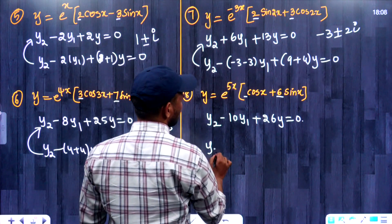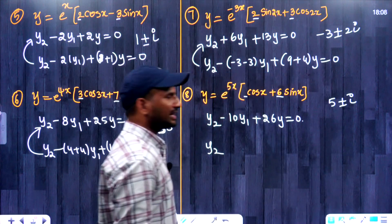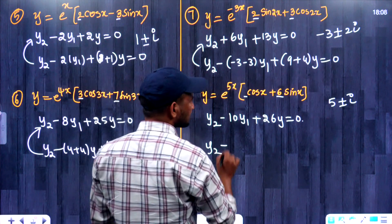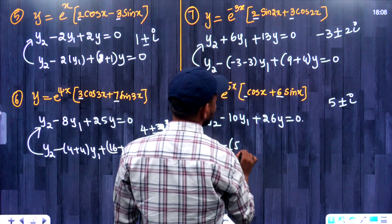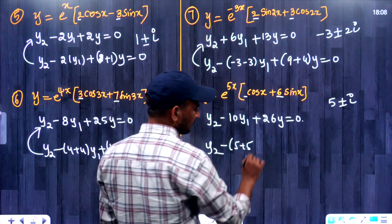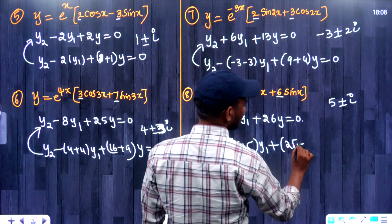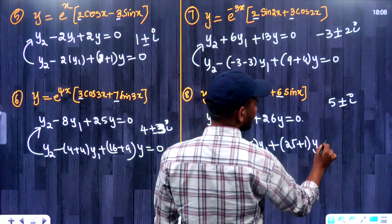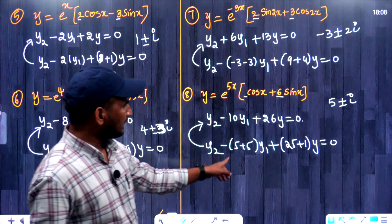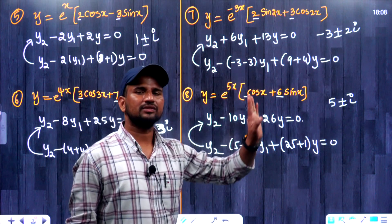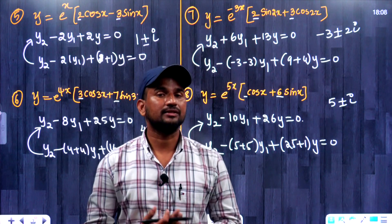Next, what are the roots here? The roots are 5 plus or minus iota. Adding these two values, the imaginary part gets cancelled, giving 5 plus 5 equals 10. So y2 minus 10y1 plus (25 plus 1) y equals 0, which is y2 minus 10y1 plus 26y equals 0. Like this, you can answer this type of question.